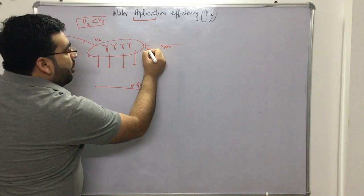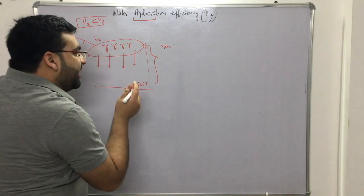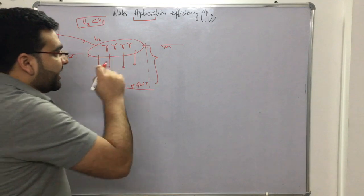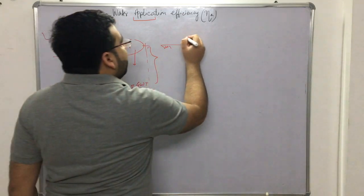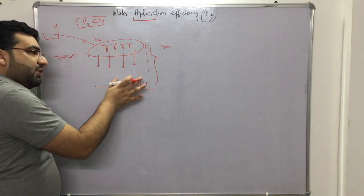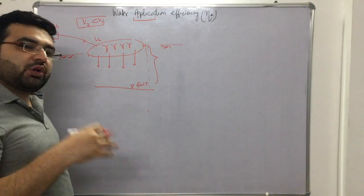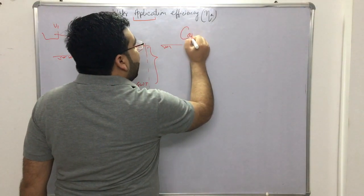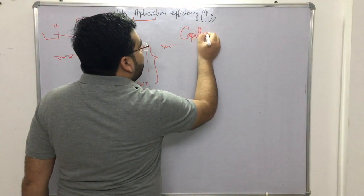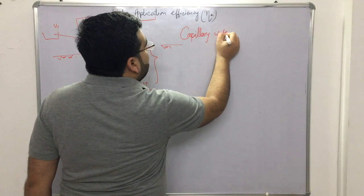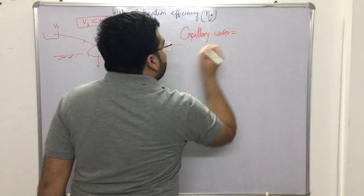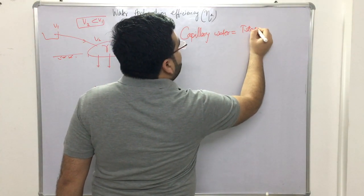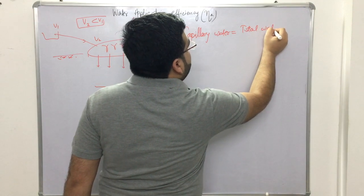The water which is held by the soil is known as capillary water. So we can say that capillary water equals total water minus gravity water.